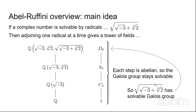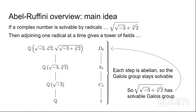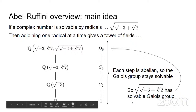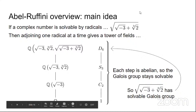There are some details being glossed over — the Galois group stays solvable if the extension is Galois, and that's not always the case. Even if you adjoin roots of unity ahead of time, you can still run into problems. It depends on how you define solvable extension.